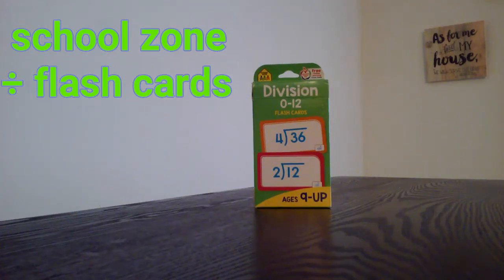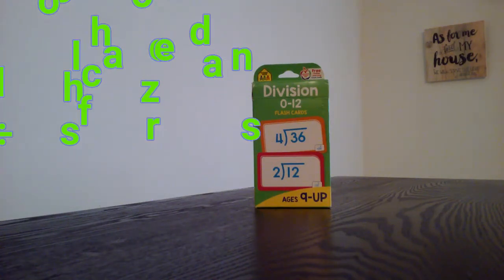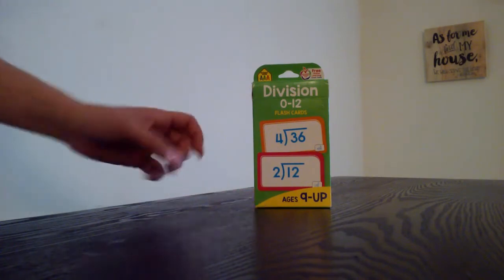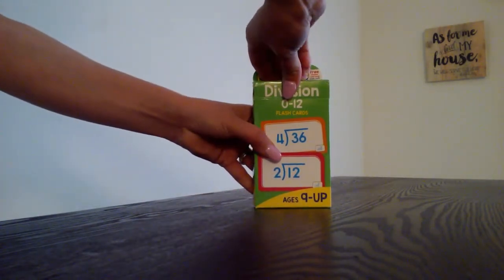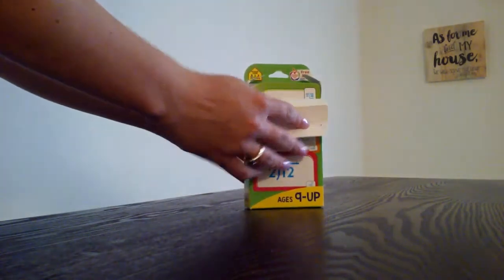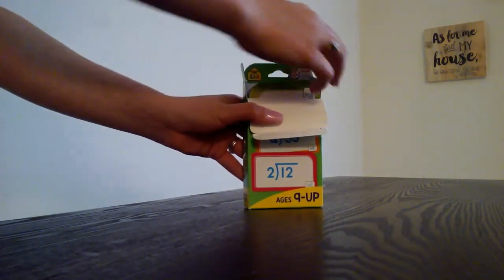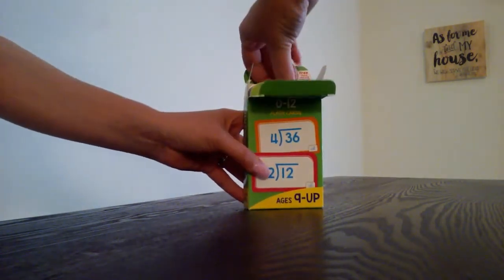Today I want to show you the School Zone Division flashcards. These are good for ages 9 and up. Take the cards out. They've already cut the box so you're not ripping the box to get the cards out more easily.